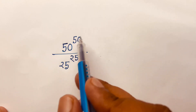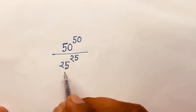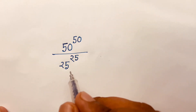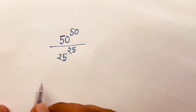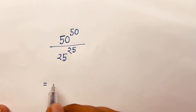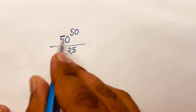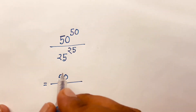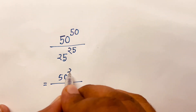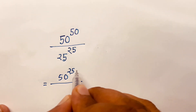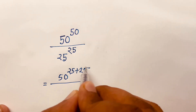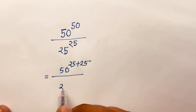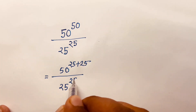How to solve 50 to the power 50 over 25 to the power 25. First, I can write the exponent 50 as 25 plus 25, so this becomes 50 to the power (25 plus 25) over 25 to the power 25.